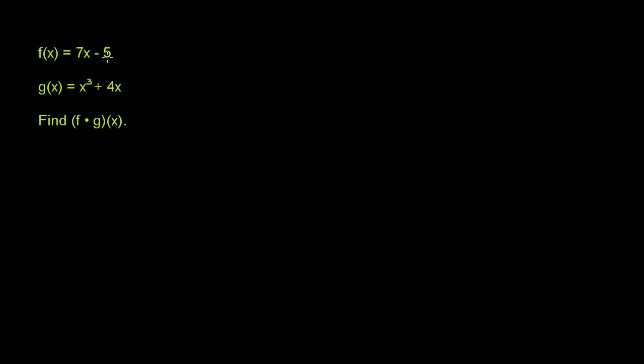f of x is equal to 7x minus 5. g of x is equal to x to the third power plus 4x. And then they ask us to find f times g of x.